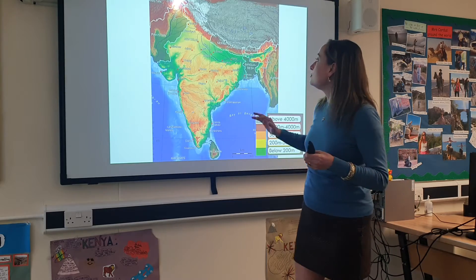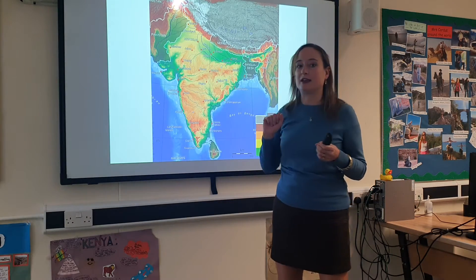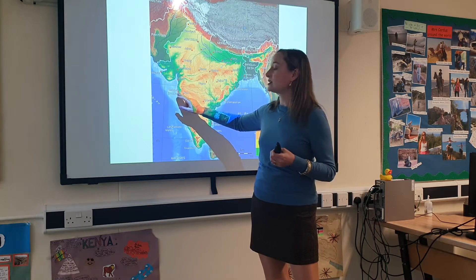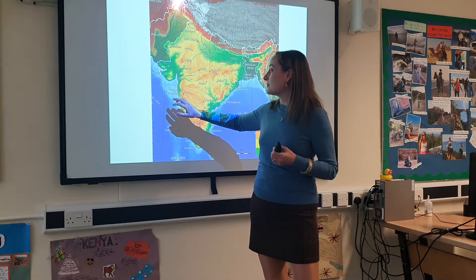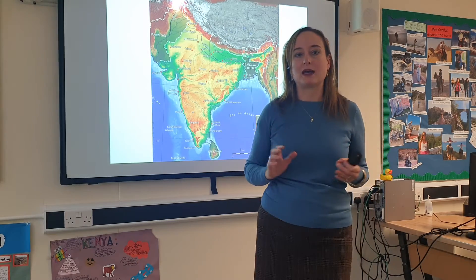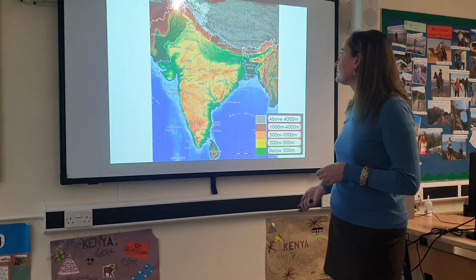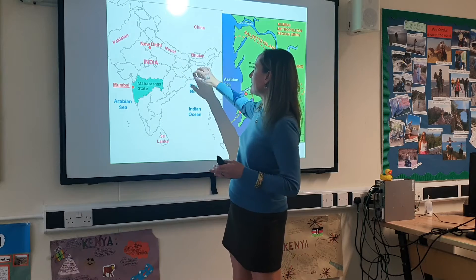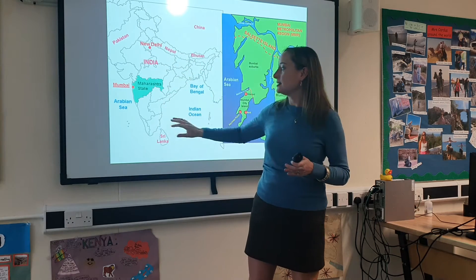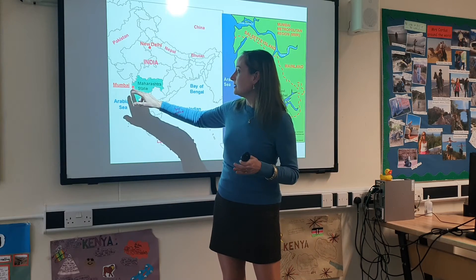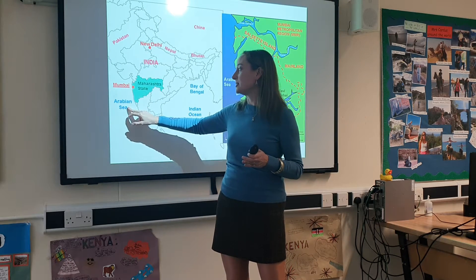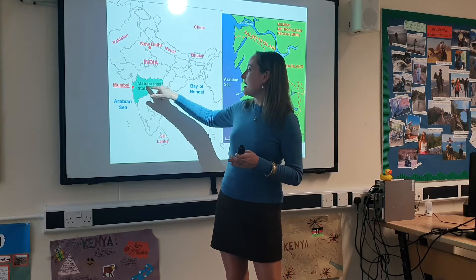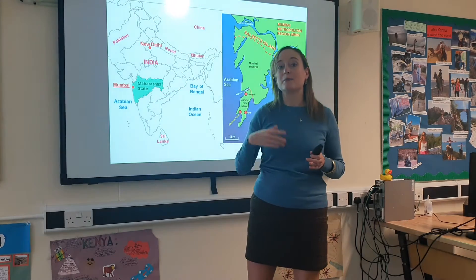The capital of India is called New Delhi, which is in the north. We're going to be focusing on Mumbai, which is on the west coast of India. On the map it also says 'Bombay' underneath it — that's because Mumbai used to be called Bombay. This next map shows India's different states. Mumbai is on the western coast next to the Arabian Sea, and it's in a state called Maharashtra.